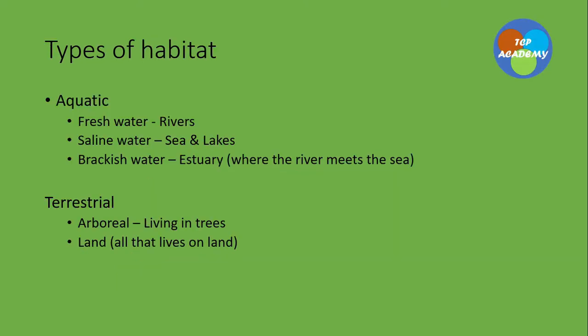Types of habitat. Habitat refers to wherever an organism lives or is found. Your habitat is going to be either aquatic or terrestrial. For aquatic environments, this would include fresh water like rivers and some ponds, saline water like the sea or some lakes, and we have brackish water, which is found pretty much in an estuary — that is usually where the river meets the sea.